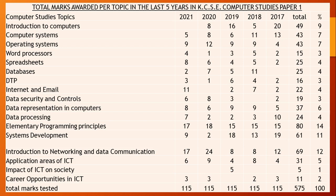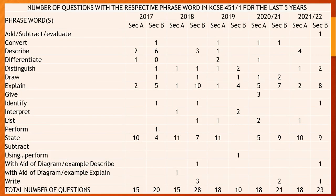This data can help you see how the trends in KCSE paper 1 setting have been for the last five years. If you consider the number of questions with their respective phrasing or wording in paper 1, section A and section B, you can check the various question types that have been used.